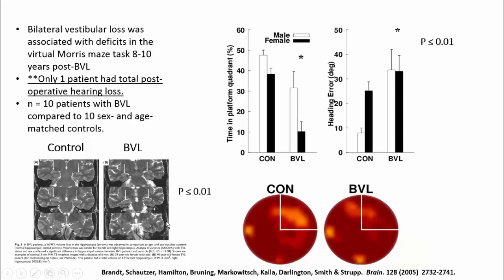For example, they spent less time in the correct quadrant of the virtual Morris Water Maze, and females performed worse than males. Also, if you looked at their heading error — the degree to which their trajectory deviated from the correct path — the people with bilateral vestibular loss showed greater error.